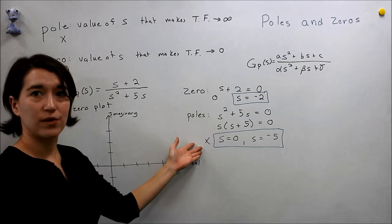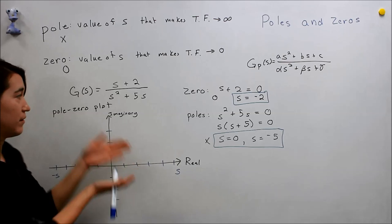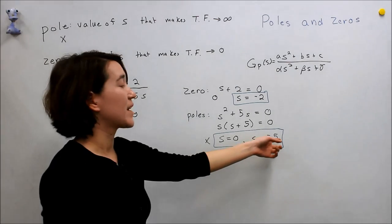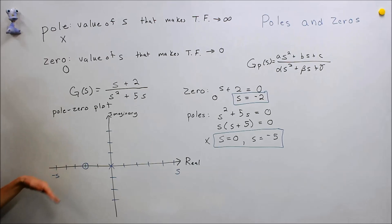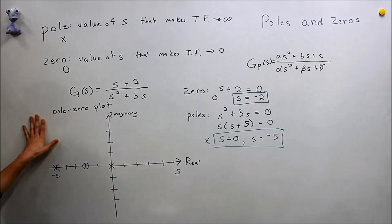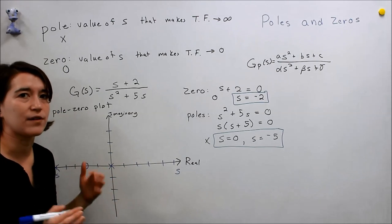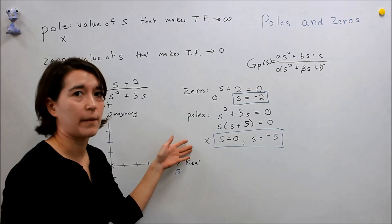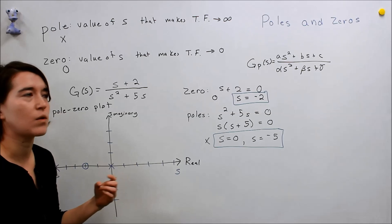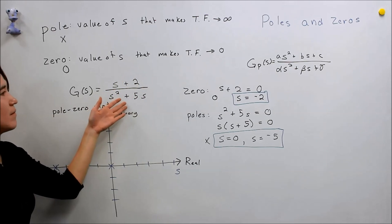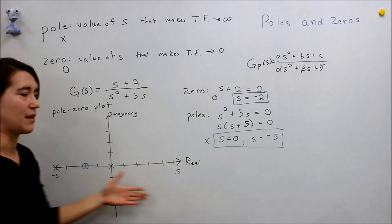And then for the poles, remember we use an x. We have s = 0, so just an x at the origin. And then s = -5. Again, only a real component, no imaginary. So we would put an x out here. So this is how we would plot our poles and zeros on the pole-zero plane. And we're going to talk about this a lot more later. But we're going to use these values to determine how the system acts. So these values can tell us quite a bit about how the system reacts to a step function or to various changes. So we'll look at that later. But right here, we just use our system, find these zeros and poles and then plot them on this type of plot.